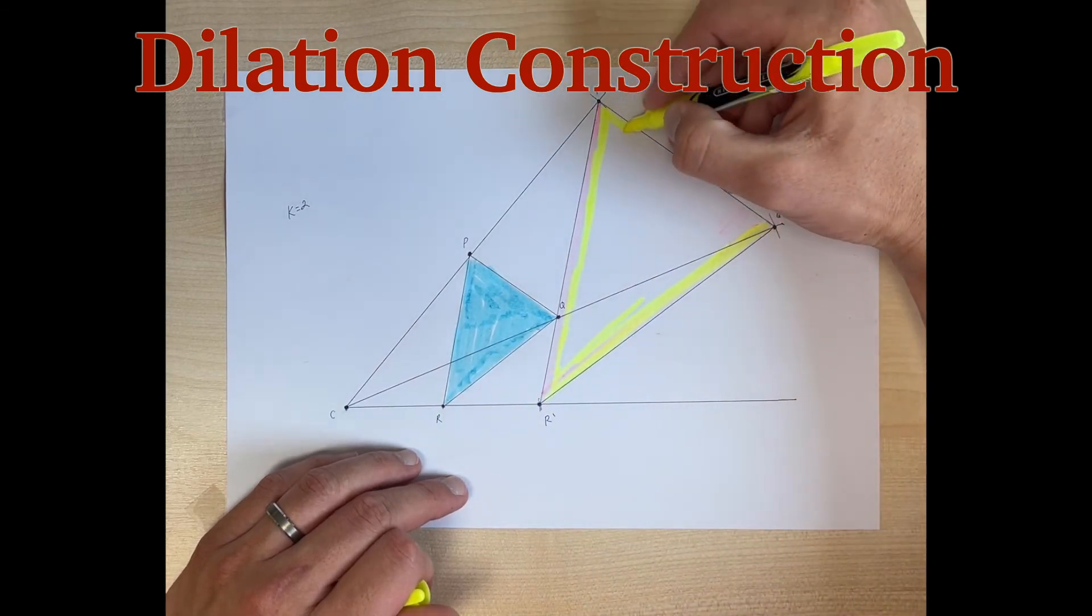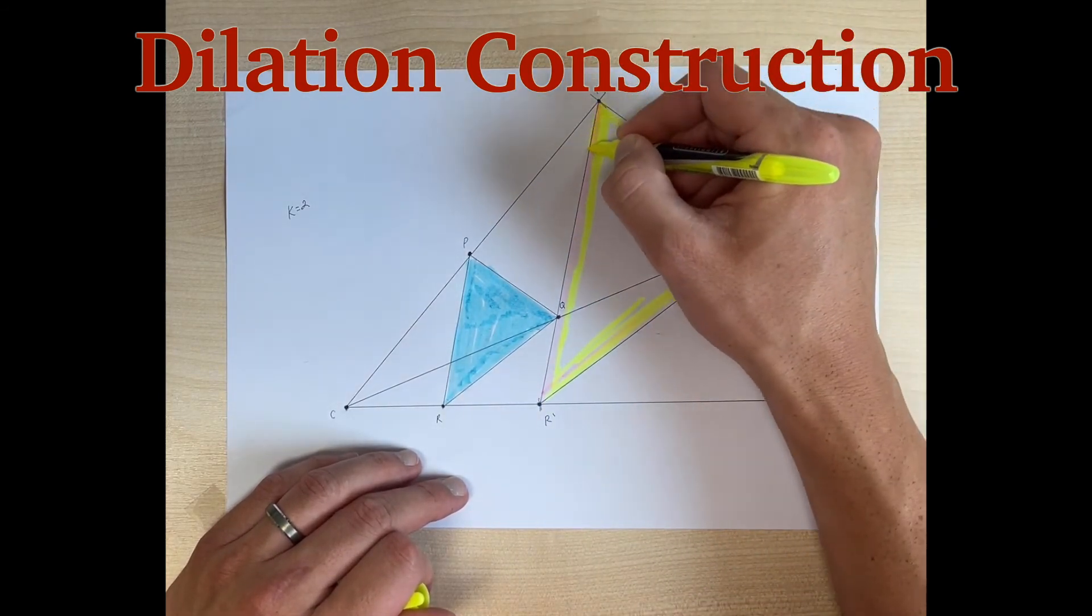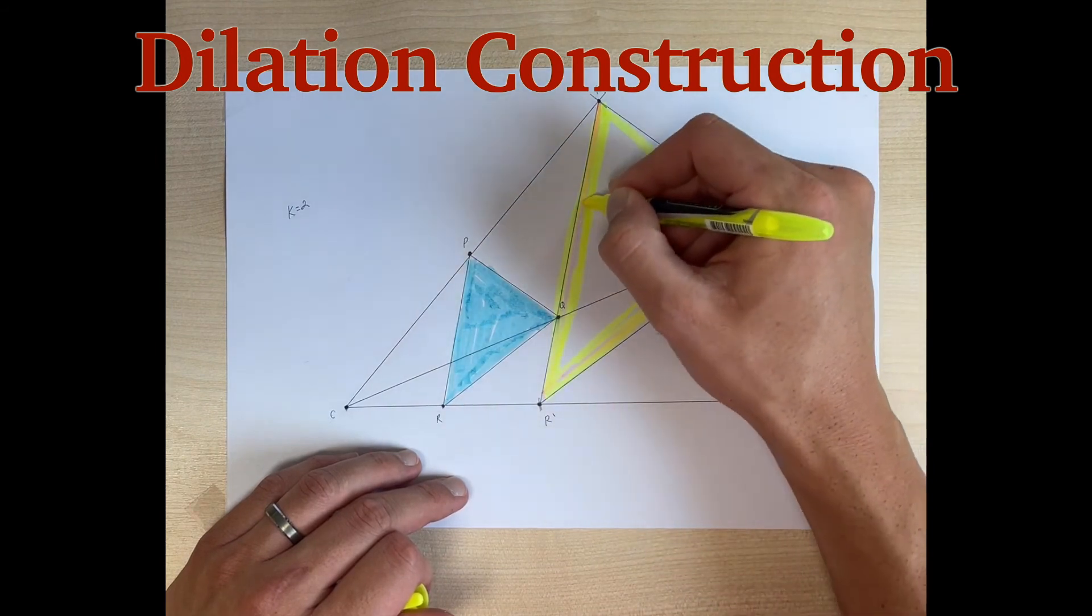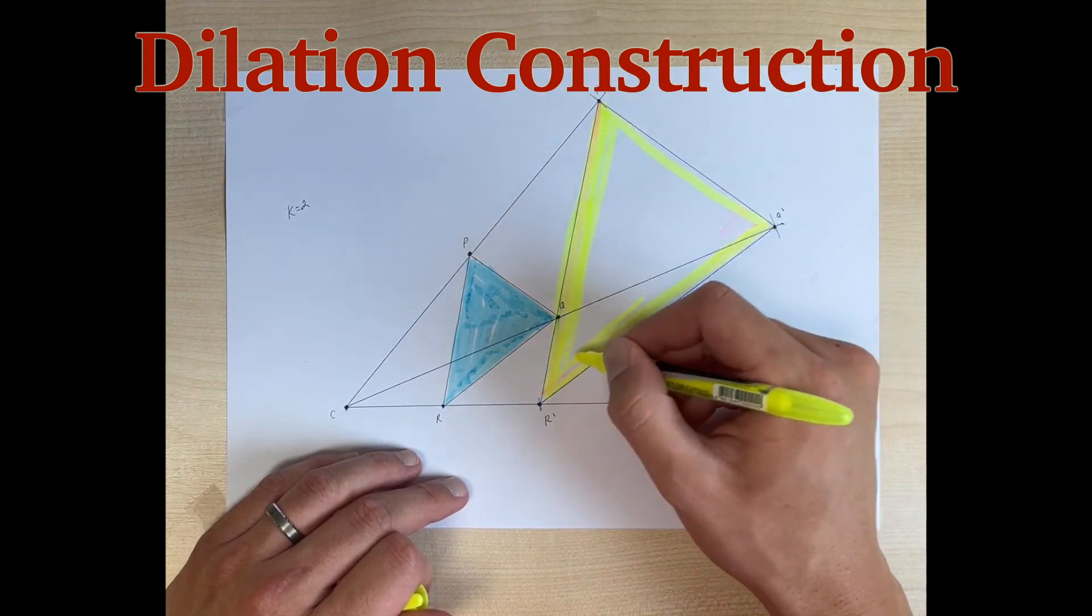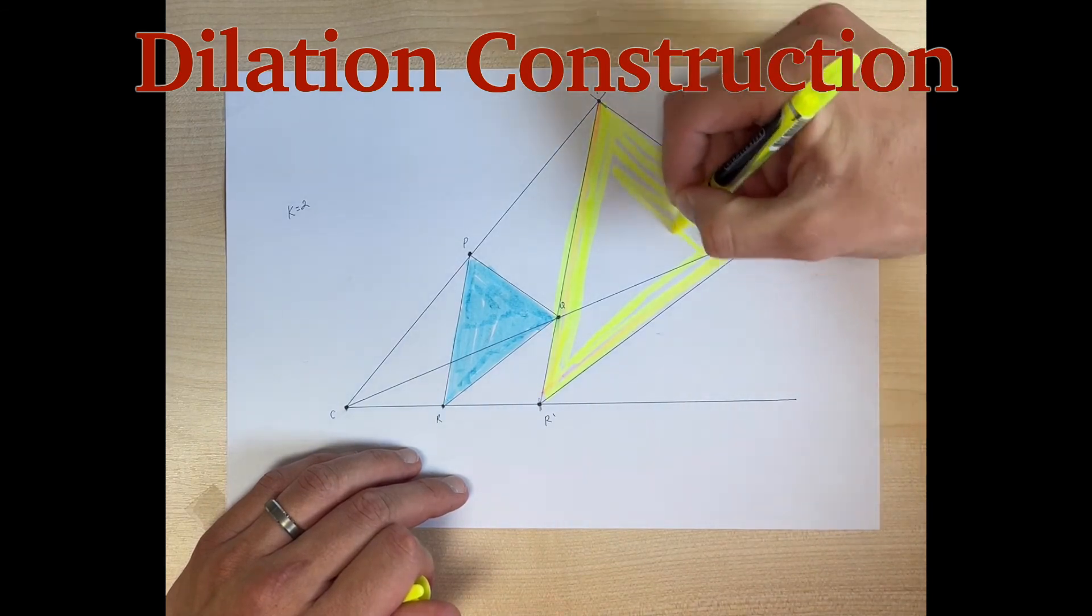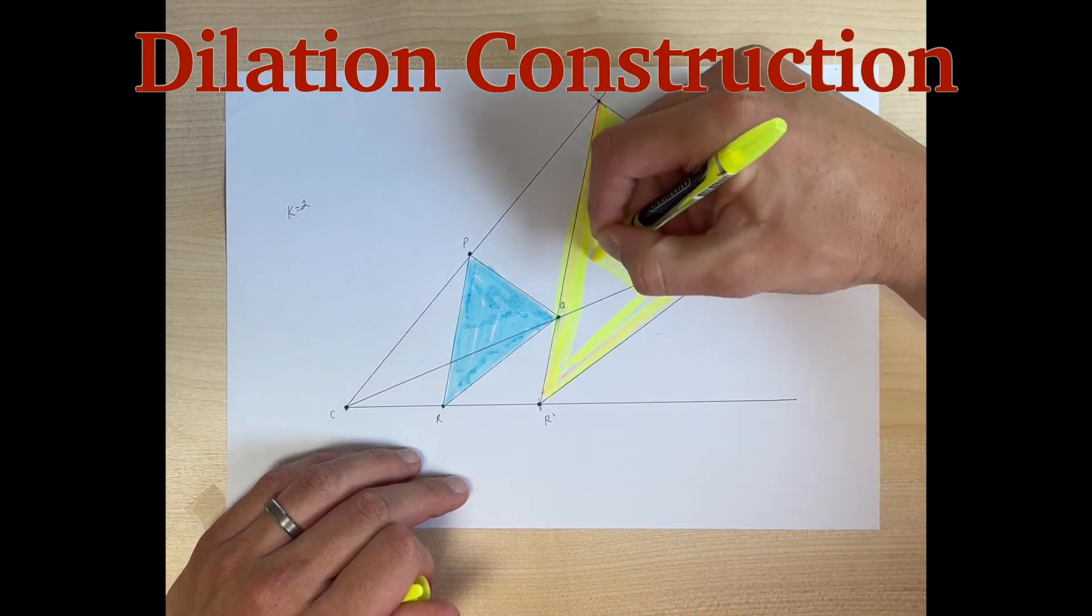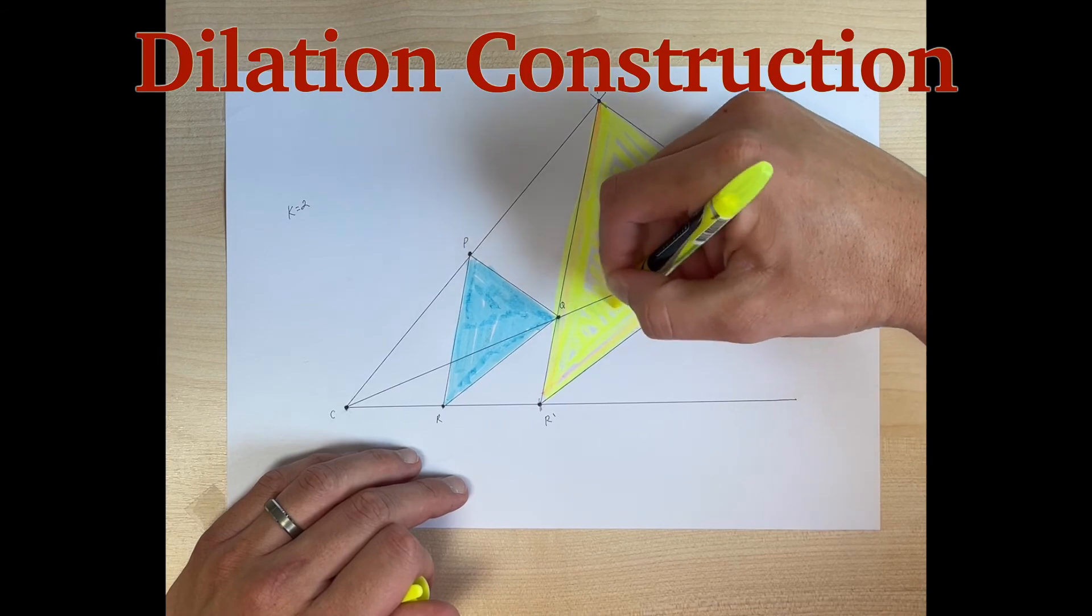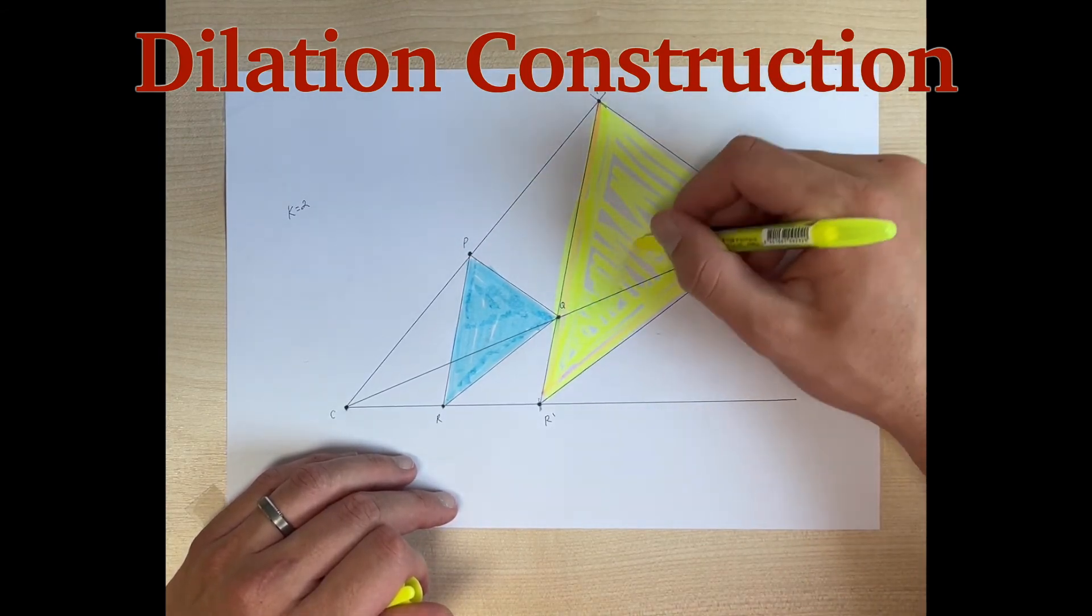That is how we dilate a shape with a specific scale factor using a compass. We can shade that in a little bit the rest of the way. Now we can see our two shapes.